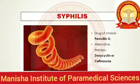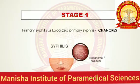In some cases, you can also give a drug called doxycycline as an alternative therapy. Now let's talk about the stages of syphilis. Syphilis is divided into three main stages. The first is primary syphilis, or you can call it localized primary syphilis.